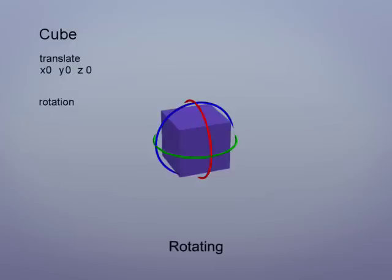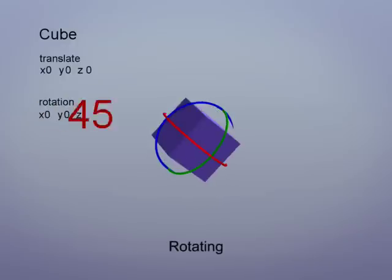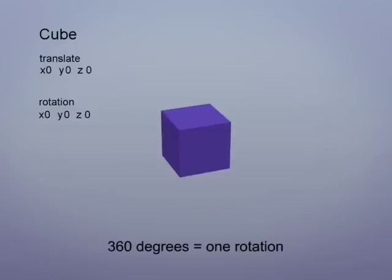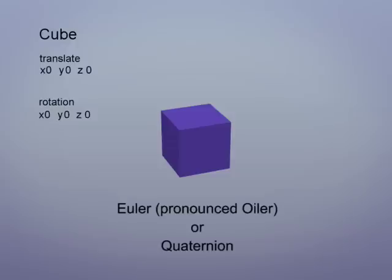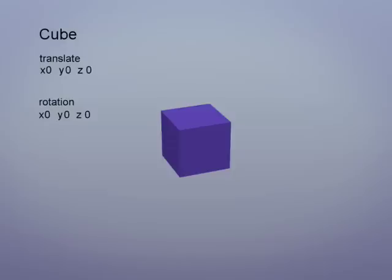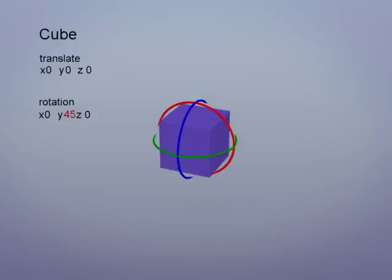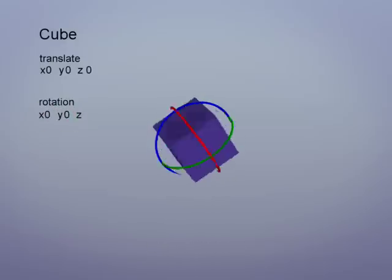An object can also be rotated — here on X, Y, or Z. These numbers represent angles, so 360 degrees would be one full rotation. Mathematically, the rotations aren't always as simple as they seem. Under the hood, the software packages are either calculating in Euler or Quaternion mathematics. But we don't need to worry about this — it's easy to grab the manipulators and rotate the objects as we please.